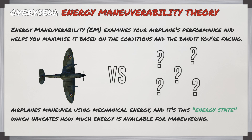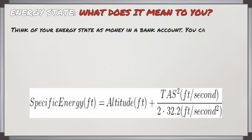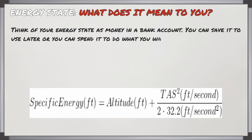Airplanes will maneuver using mechanical energy, and it's this energy state which indicates how much energy is available for you to maneuver. You want to think of your energy state as money in a bank account — you can save it to use later, or you can spend it now to do what you want.